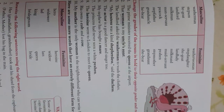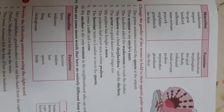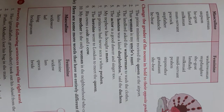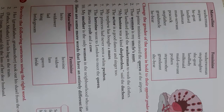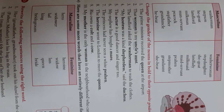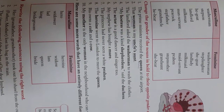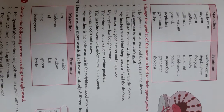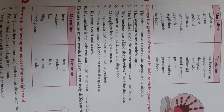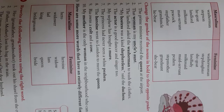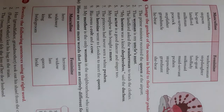Now change the gender of the nouns in bold to their opposite gender. The first one: 'The prime minister received the queen at the airport.' We have to write in the opposite gender: 'The prime minister received the king at the airport.' The second one: 'That woman is my uncle's aunt.' Changing the gender: 'That man is my aunt's uncle.' Clear?